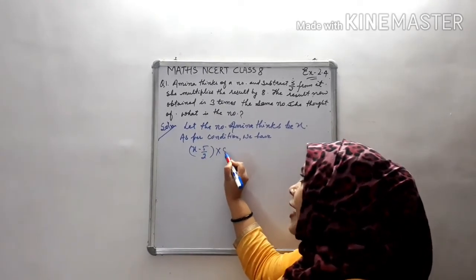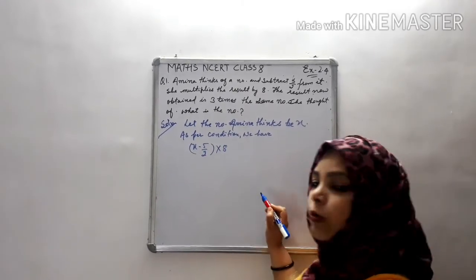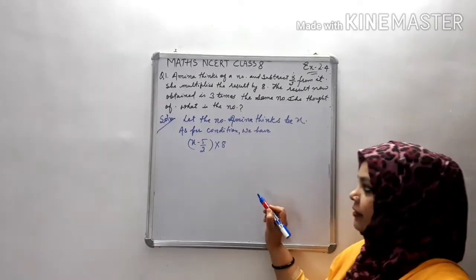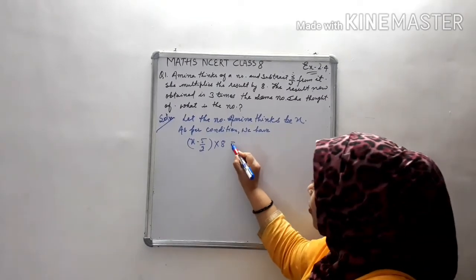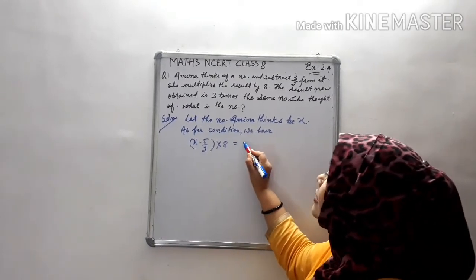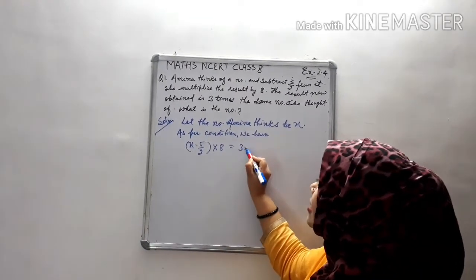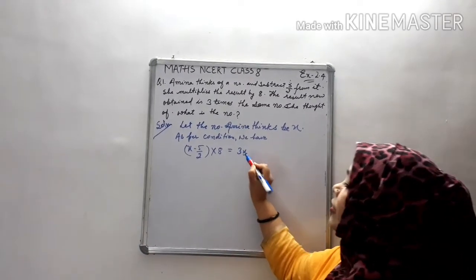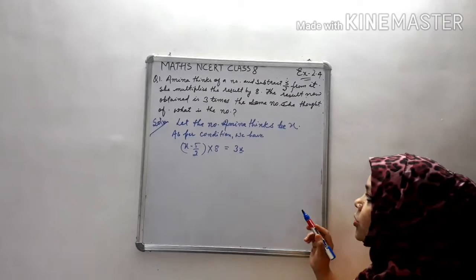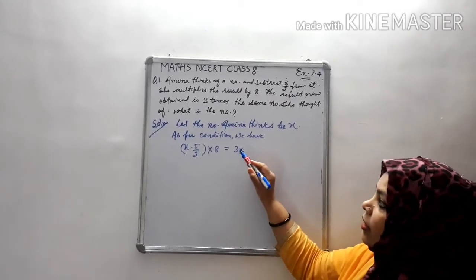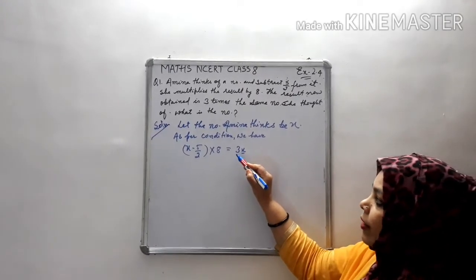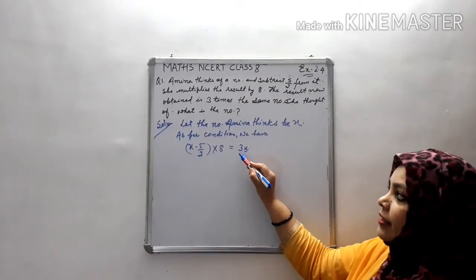Then she multiplies the result by 8. The result she gets is 3 times the number she thought of. So the equation becomes 8 multiplied by (x minus 5/2) equals 3 times x.